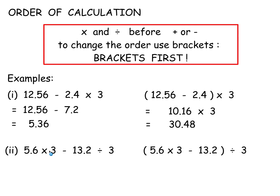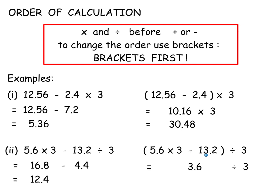There's a multiplication and a division — they get done first before you subtract. So that's the multiplication done, that's the division done, now do the subtraction. Here, the brackets get done first: do that multiplication — 5.6 times 3 is 16.8 — take off 13.2, get that answer, and divide by 3. So multiplication and division are done first, unless there are brackets — you do the brackets first. That's the order of calculation.